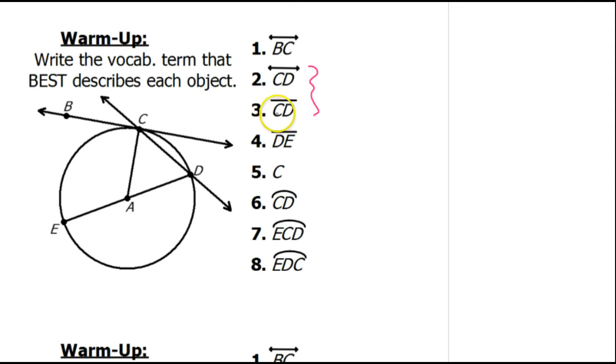They both involve CD but problem number 3 has a segment symbol over the top while line CD has a line symbol over the top. And that symbol on the top is the only way you will know which one you're being asked for. So focus on that.